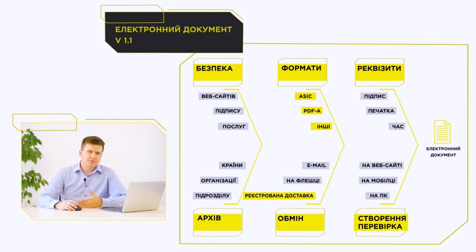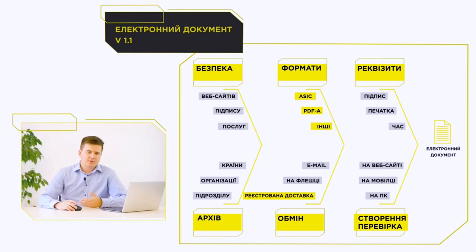The next step, when we have the PDF format recommended by the proper working order of the electronic documents of the archival service, we must ensure the long-term or permanent preservation of the electronic signature. As mentioned in the first video, you have every year or every two years to update your digital signature, related to the security and development of computer technology. In order to ensure the legal validity of electronic documents, we need to use certain electronic signature formats. The format now mandated by Order No. 60 of the E-Government Agency is the ASIC format, standardized by the European Standardization Organization ETSI.